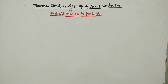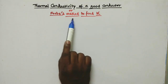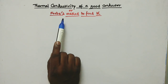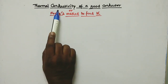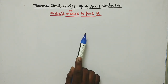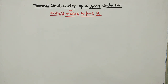Good evening, my dear students. In our previous class, we have discussed about thermal conductivity of a bad conductor. And in this class, we are going to discuss about the same property of a good conductor. This method is also called Forbes method to find K — K means thermal conductivity. This method is one of the best methods to find thermal conductivity because we can measure the thermal conductivity of a good conductor absolutely.